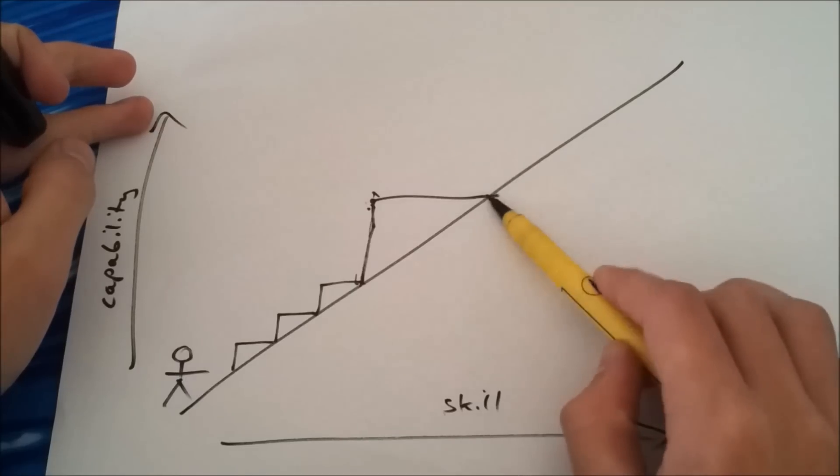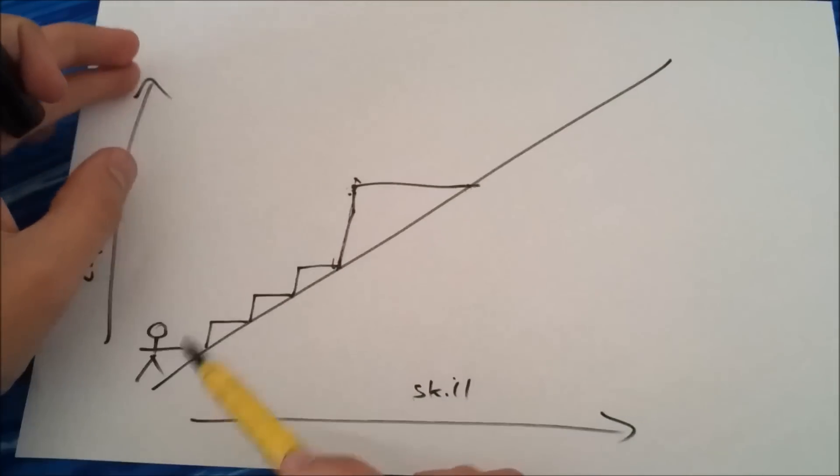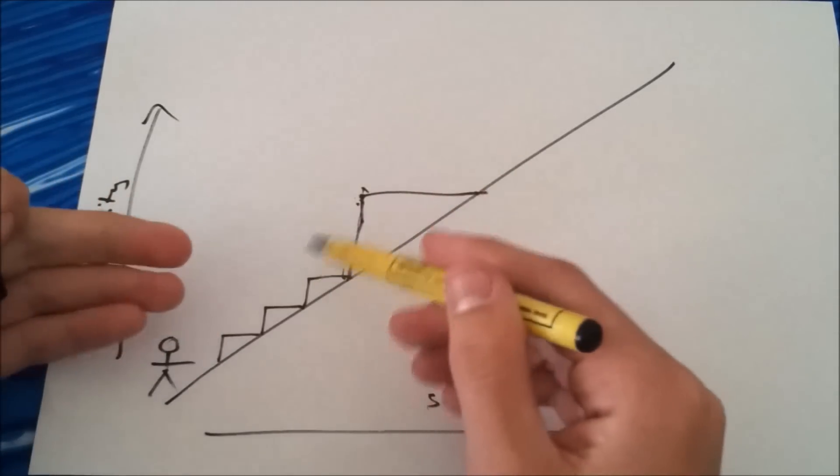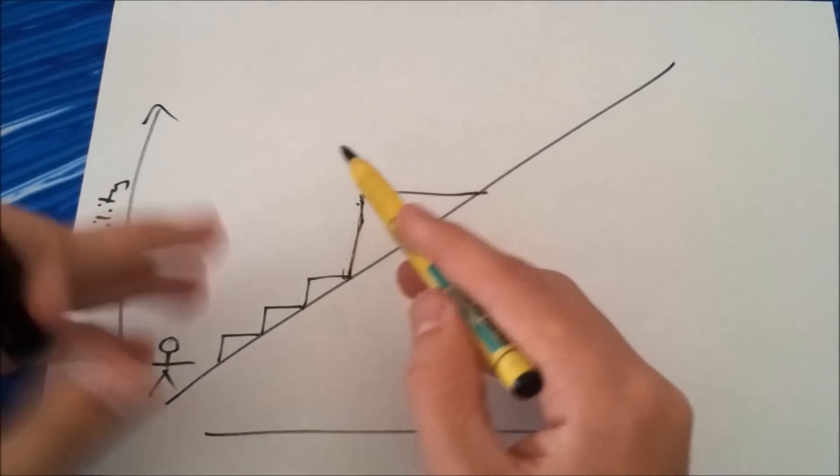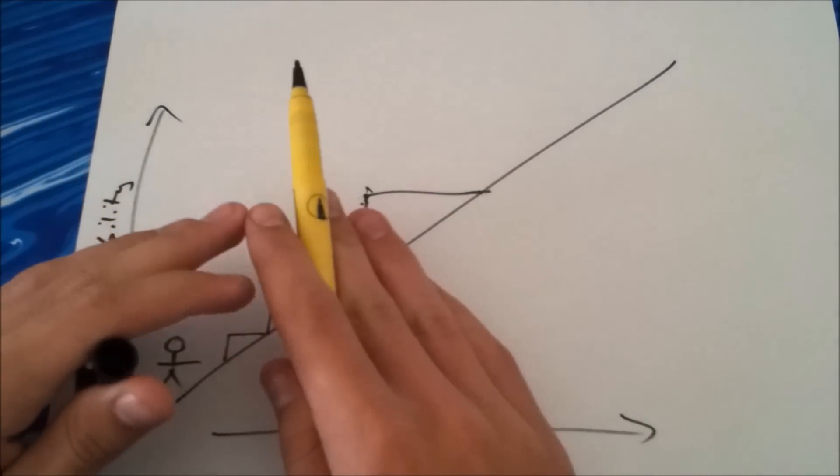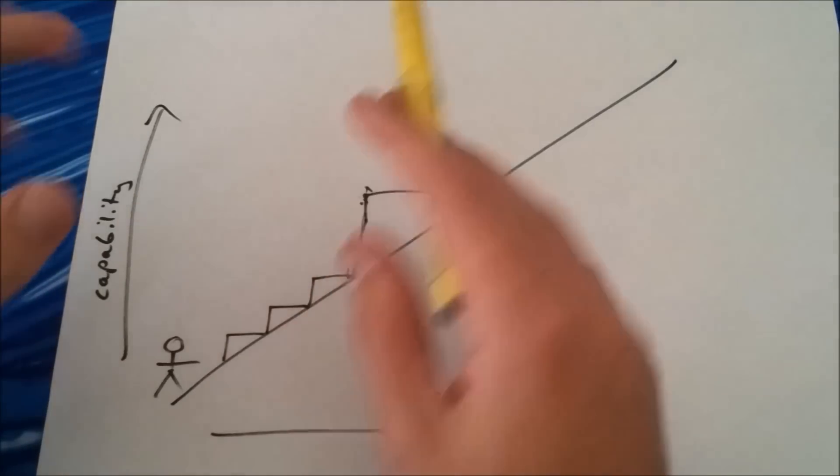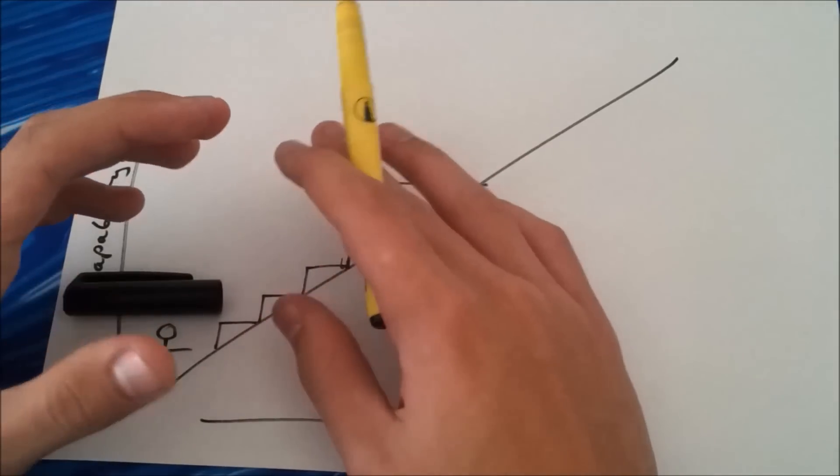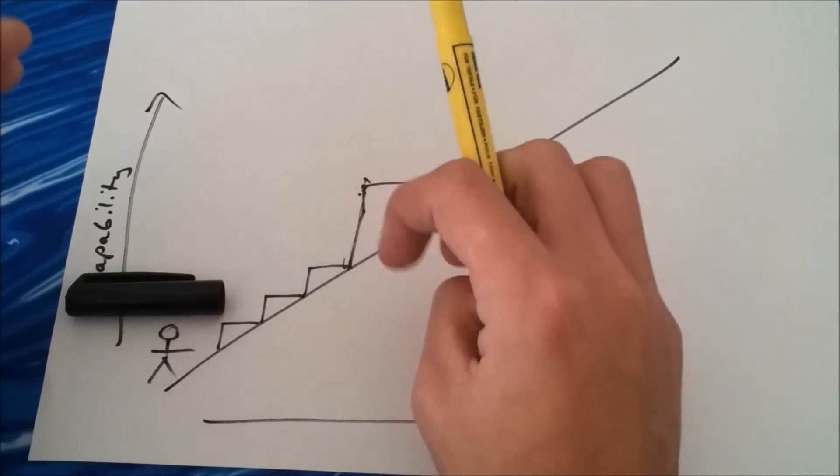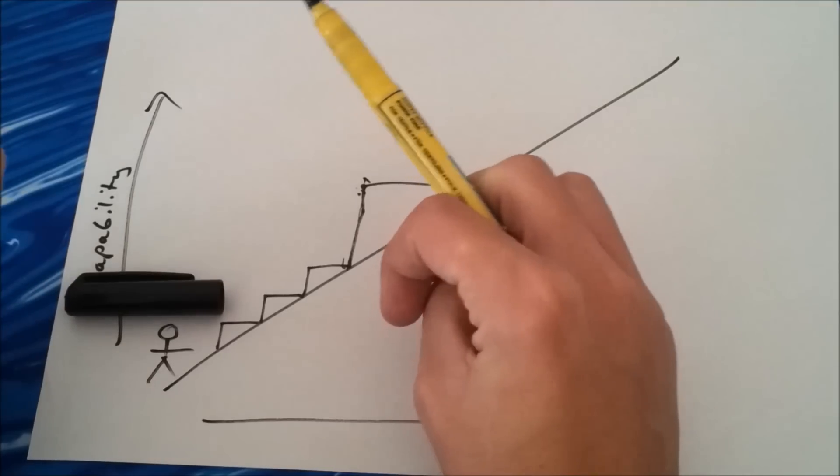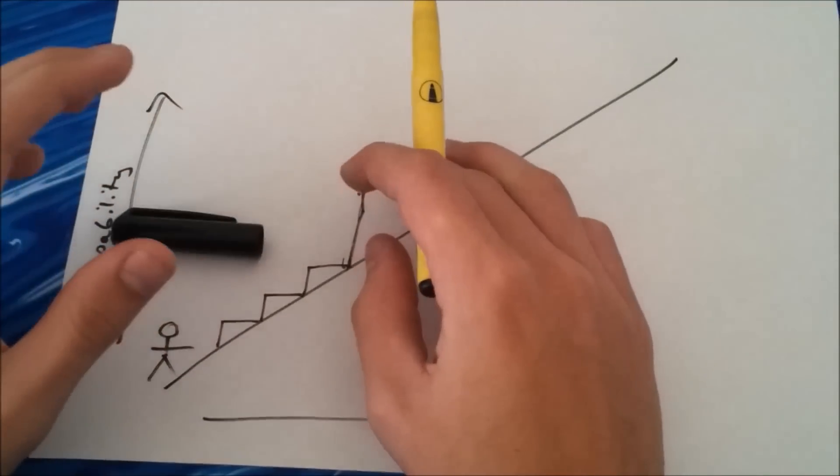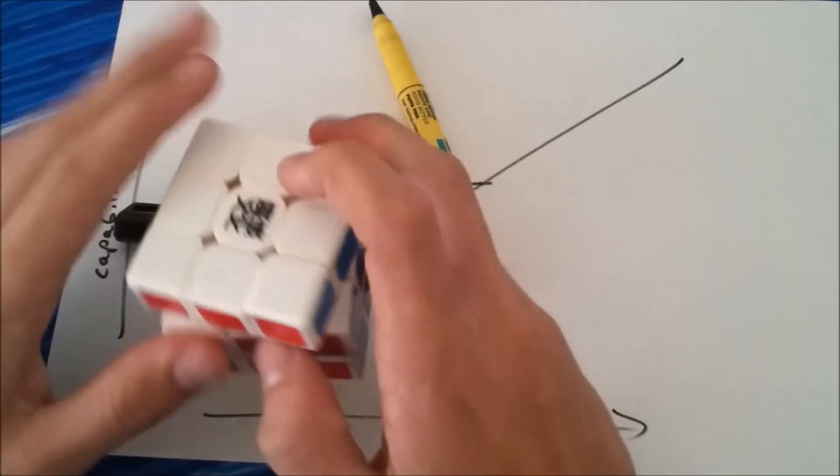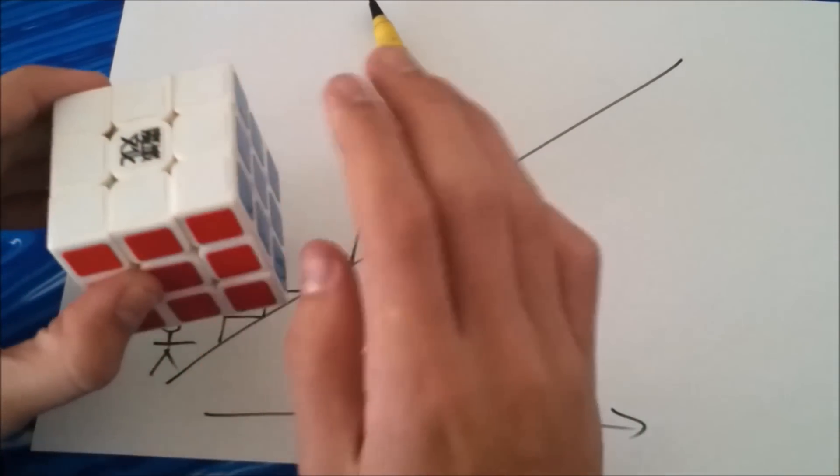But I think my main view is that your main improvement is going to come, well obviously once you've learned like CFOP, your main improvement is just going to come from practice. Because my view is that when you're doing something over and over again, you naturally become more efficient at it. So for solving, your ultimate goal is to not do any active thinking during your solve. You don't want to be thinking about anything on the cube, you just want it to be all muscle memory.